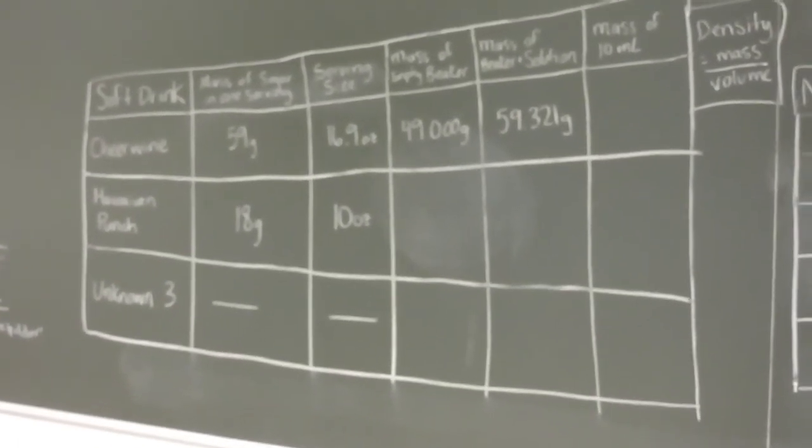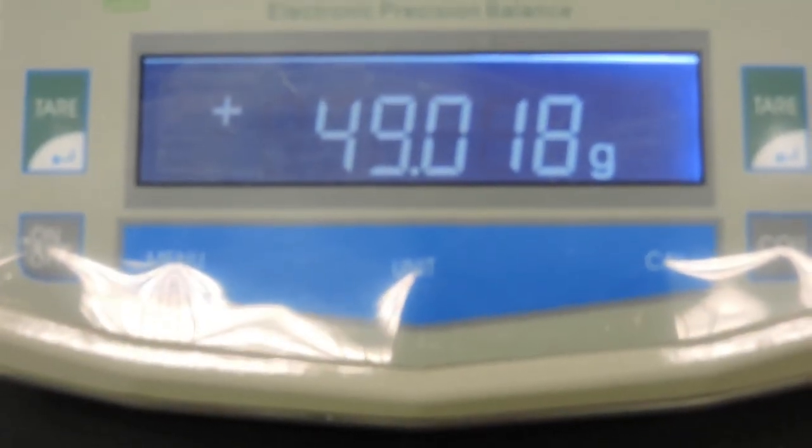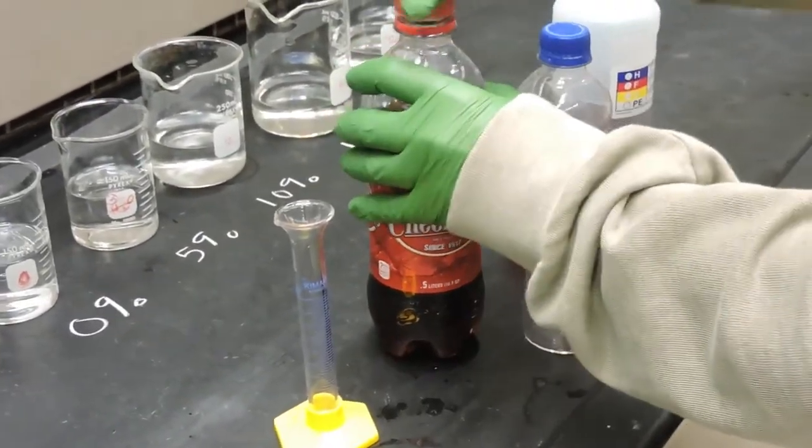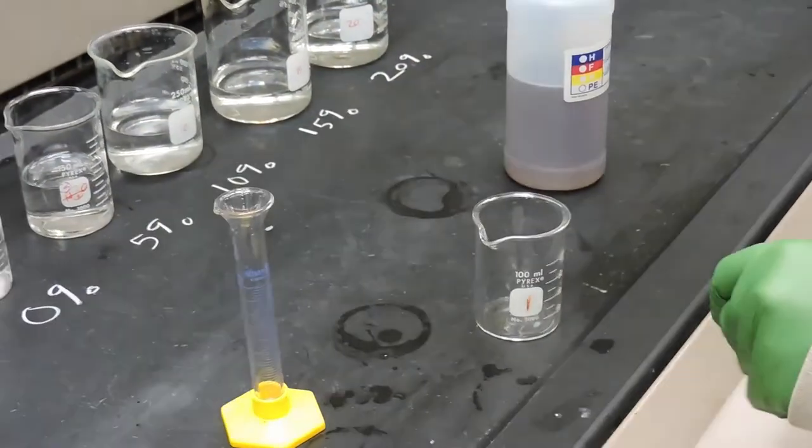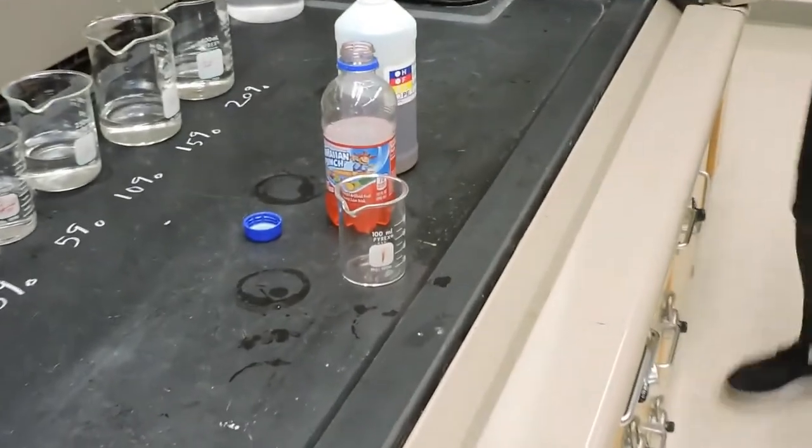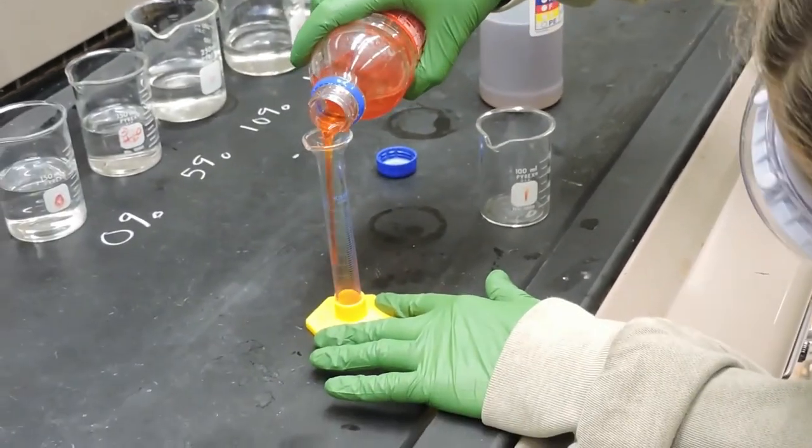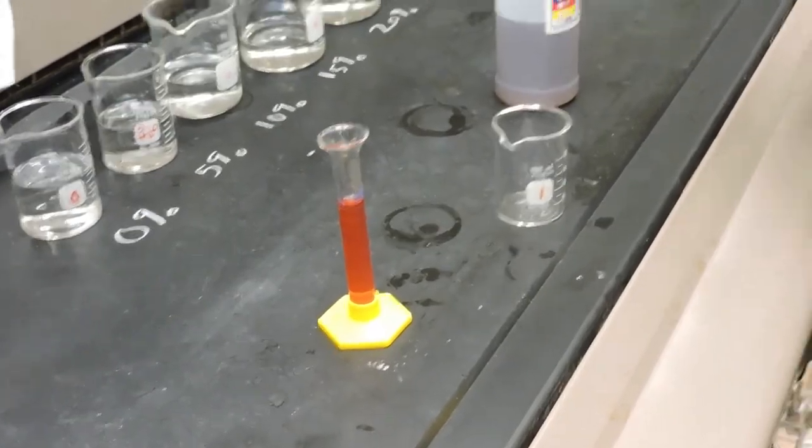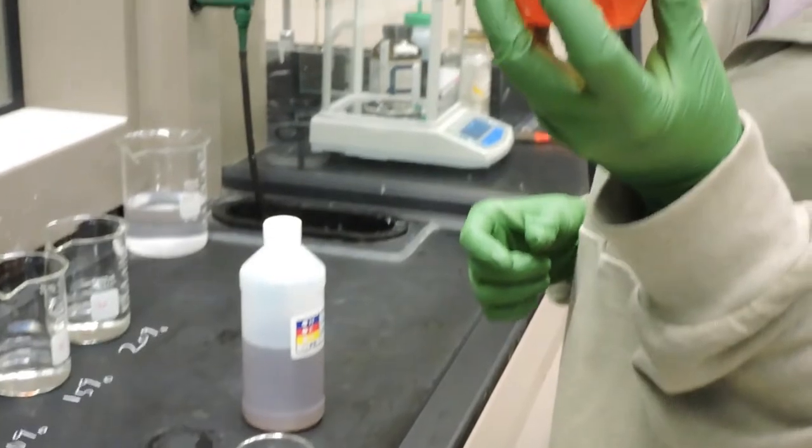Next, we'll find the Hawaiian Punch parameters. So first we're going to pre-weigh the beaker. The mass of the empty beaker is 49.018 grams. And into the beaker we will place 10 milliliters of Hawaiian Punch. What flavor Hawaiian Punch is this? Fruit Juicy Red.